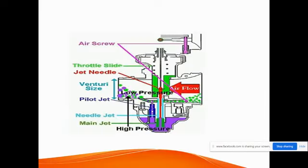How it works: air is entering from this end, and from this point the fuel is supplied. A needle is provided here. This portion is filled with air. There is a spring for various adjustments — for the air screw and other purposes. Then there is a throttle, which is used to increase the fuel supply. A throttle slide and a pitot tube are applied, and the fuel-air mixture is combined and sent to the engine.